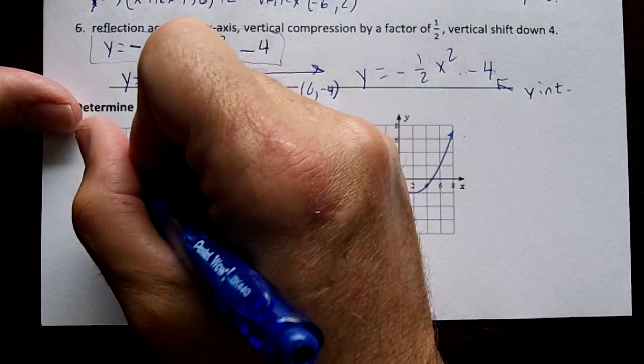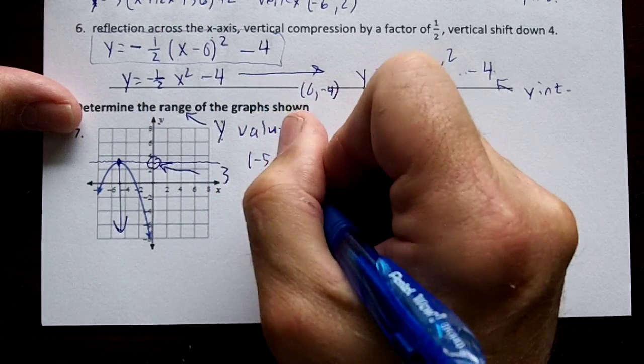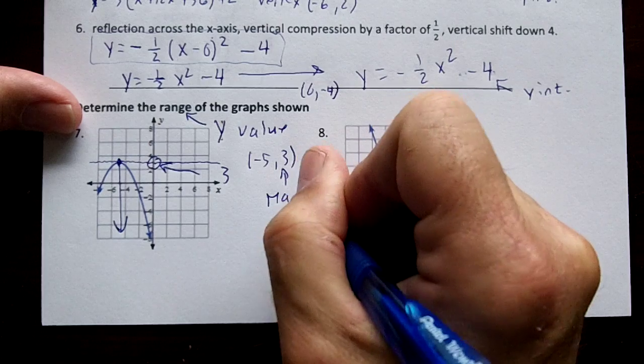So this dot right here, negative five comma three, this dot is a maximum value.